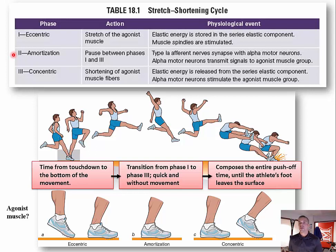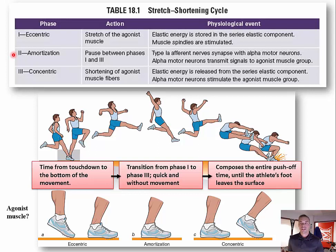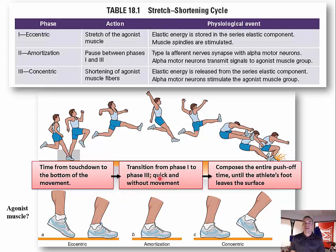The second phase is the time between the eccentric and concentric phases, termed the amortization phase. During this delay, type 1a afferent nerves synapse with the alpha motor neurons within the spinal cord, and the alpha motor neurons transmit signals to the agonist muscle group. This phase is perhaps the most crucial — this duration must be kept short. In the long jump example, once the jumper has touched down and movement has stopped, the amortization phase has begun; as movement begins again, the amortization phase has ended — a very quick transition with no movement occurring within it.